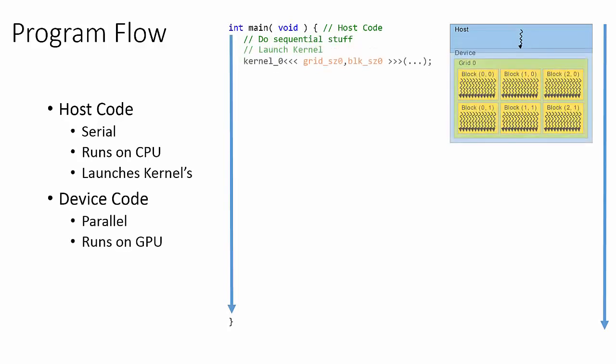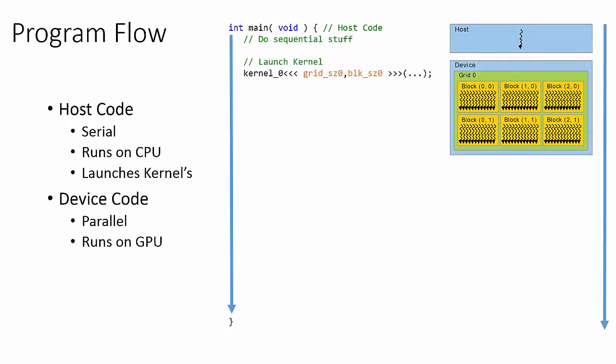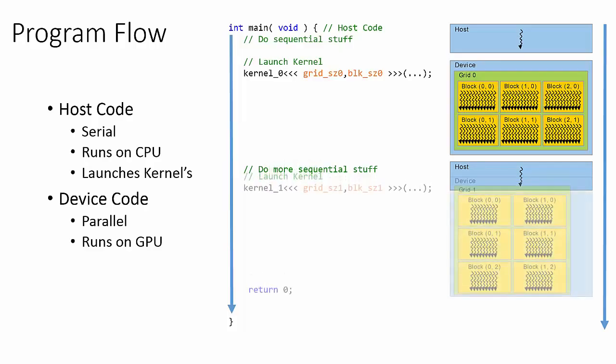Offloading to the GPU is achieved through launching a kernel, which is executed on the device as a grid. Control of the program is immediately returned to the host, and the main C function continues from the point directly after the kernel launch, executing any serial code until we launch another kernel.